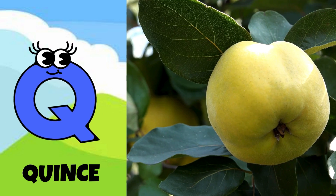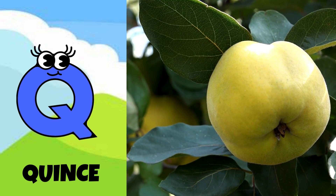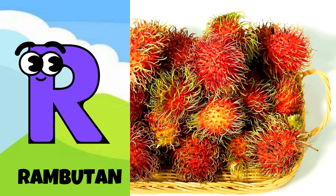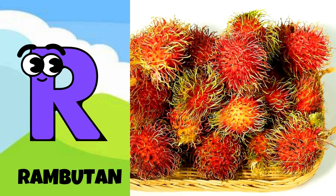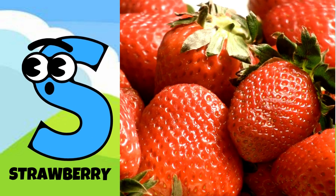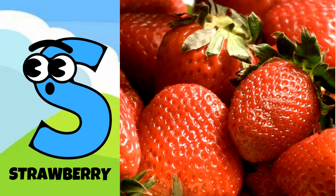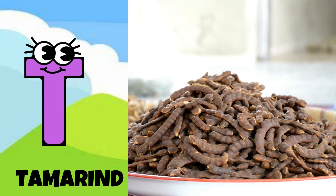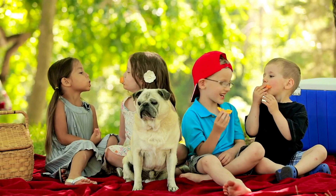Q is for quince, qu-quince. R is for rambutan, r-r-rambutan. S is for strawberry, s-s-s-strawberry. T is for tamarind, t-t-t-tamarind.